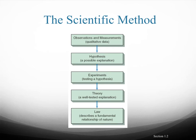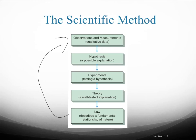Here we see a flow chart showing the scientific method. Think of it more as a cycle — you don't have to start at a particular step. You might start with an observation, a hypothesis, or a theory someone else developed. You could start at any point and cycle through step by step, and sometimes do the steps a little out of order. But if you're doing real science, all the elements of the scientific method are going to be there.